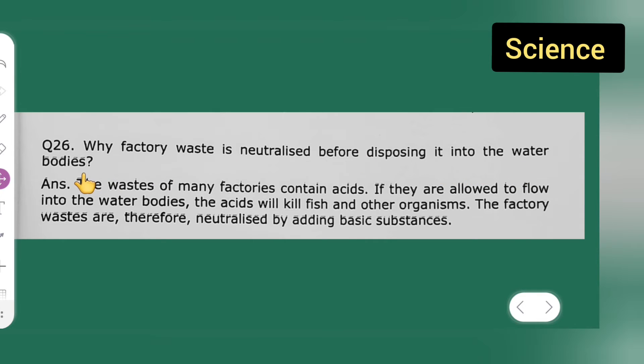Answer: The waste of many factories contain acids. If they are allowed to flow into the water bodies, the acid will kill fish and other organisms.